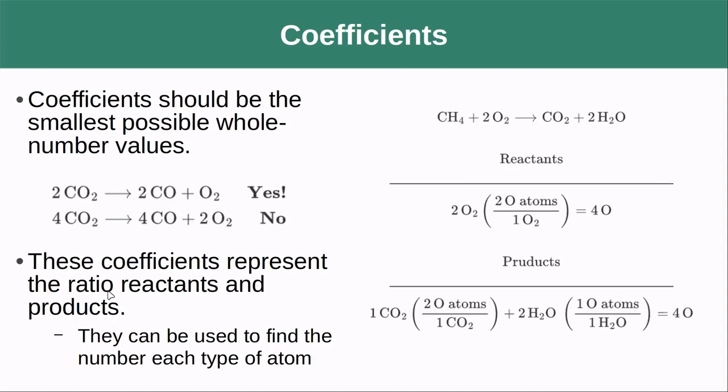These coefficients represent the ratio of reactants and products, and they can be used to find the number of each type of atom. For instance, let's say that I wanted to know how many oxygen atoms were on the reactant side and how many oxygen atoms were on the product side. I have two O2s here. I tend to take that coefficient, two O2. There are two oxygen atoms for every one O2. I cancel that and I see that I have four oxygens on this side. On the product side, I have one CO2 and two H2Os. They both have oxygen in them. So there's two oxygen atoms for every one CO2. So this guy contributes two oxygen atoms and there are two H2Os each contributing an oxygen atom. So two times one is another two. Two plus two is equal to four oxygen atoms.